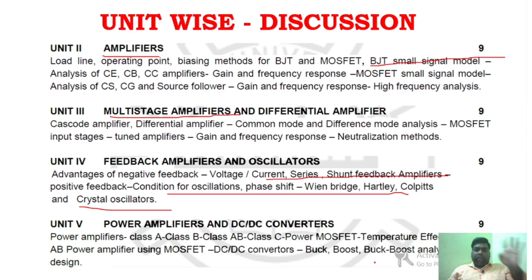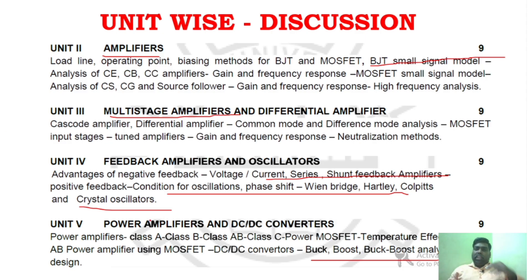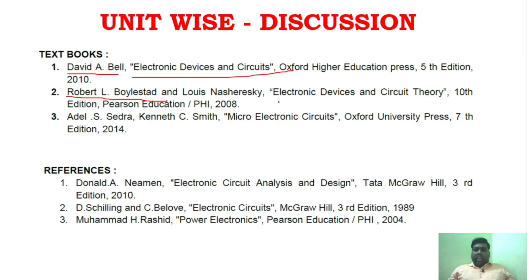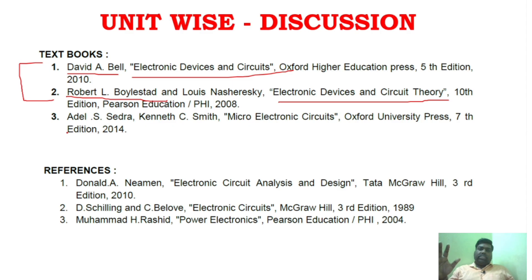Unit 5 is once again one of the key units to focus on. Regarding the prescribed author books: the first is David A. Bell's Electronic Devices and Circuits, and the second is Robert L. Boylestad's Electronic Devices and Circuit Theory. I have given the links to both books in the description. Using the prescribed author books will help you get better diagrams, better equations, and ultimately more marks.